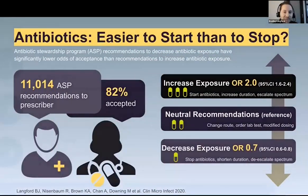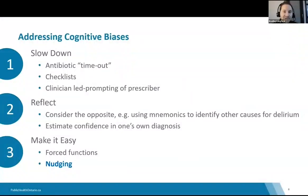There are three different approaches to address cognitive biases: first is to slow down, second is to reflect, and third is to make it easy. Good recommendations in general from a stewardship perspective.